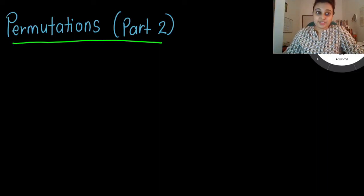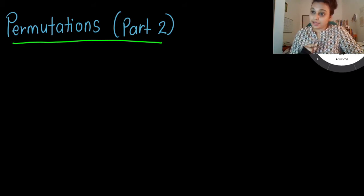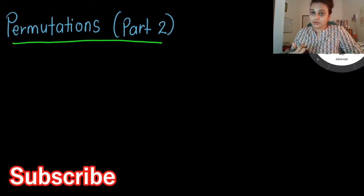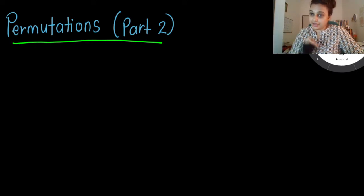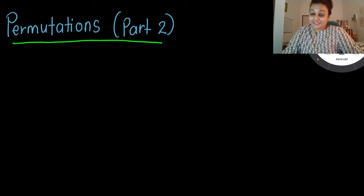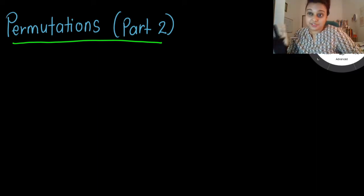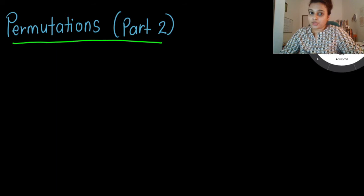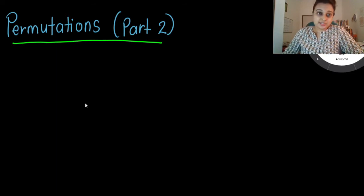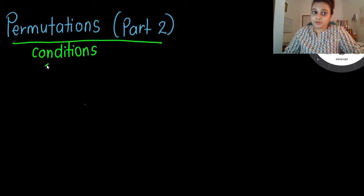Hi guys, so today's video we are going into permutation part 2, and in this part 2 we are going to look at questions that have conditions — like when you arrange something you have to arrange with certain conditions. So let's get started and in this part we are going to look at conditions because conditions are very very important when you are doing permutations.